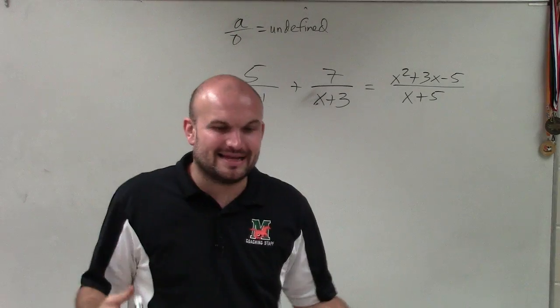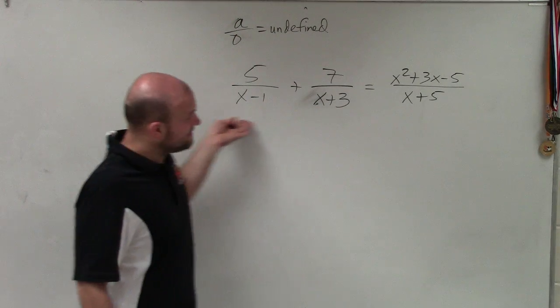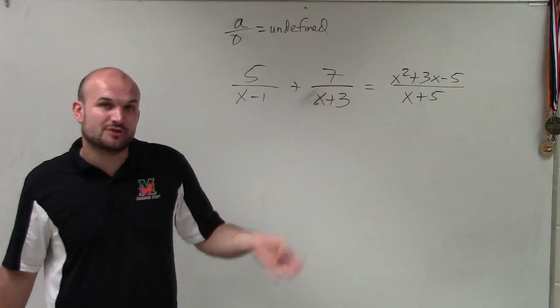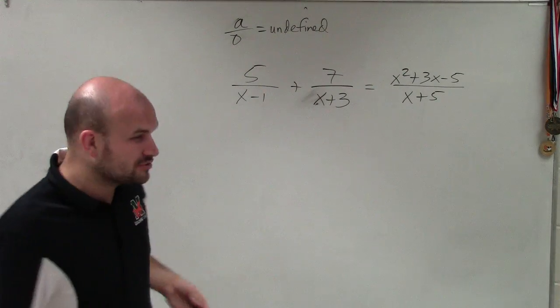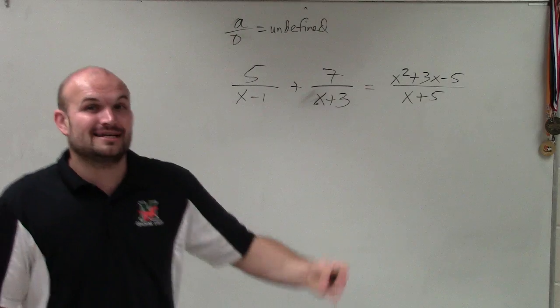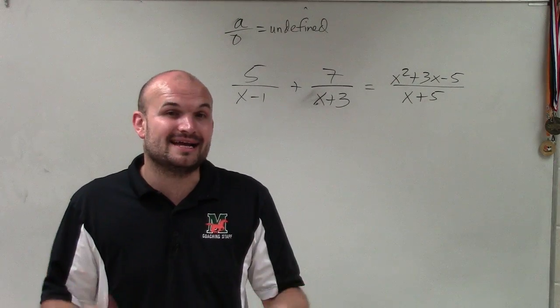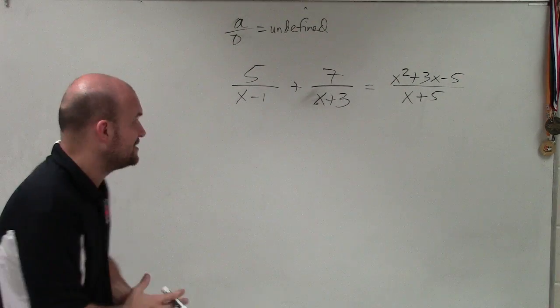when we're looking at a rational equation, even a crazy one like this, I just made it up. But if we're looking at this, what we need to understand is, alright, well, what I'm going to do is I'm going to put restrictions on my domain, restrictions on my solution, saying this, I don't know what the answers are, but I know when I get the answers, the answers cannot be these values.